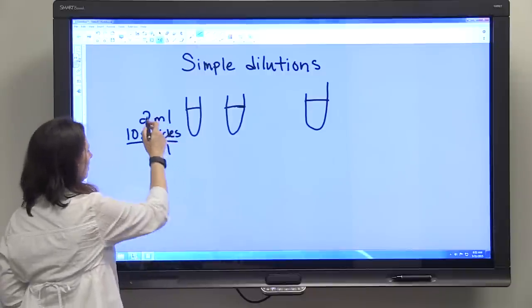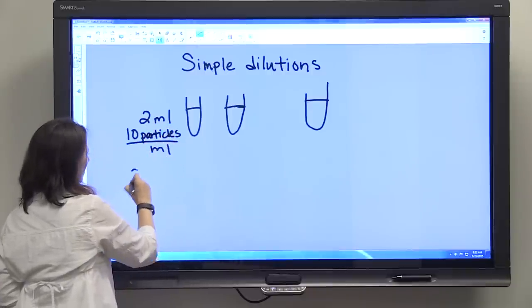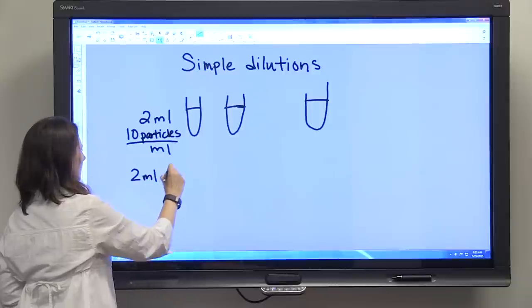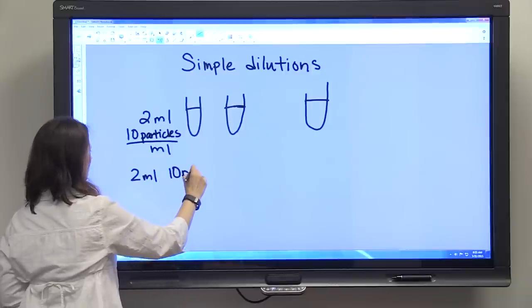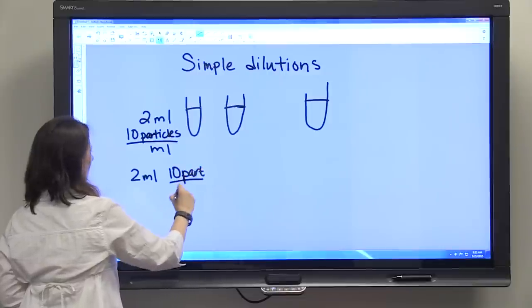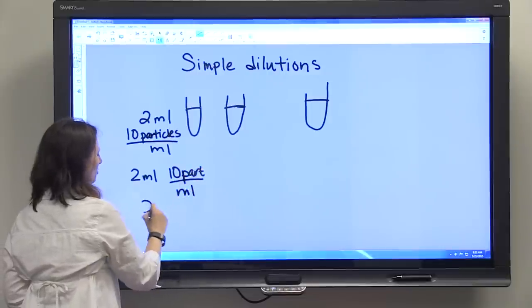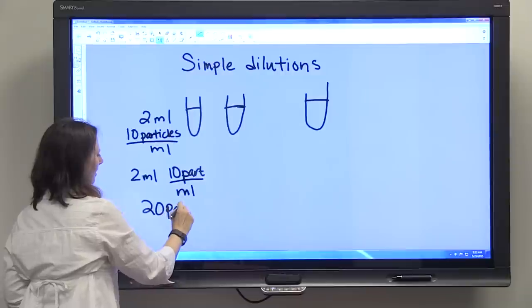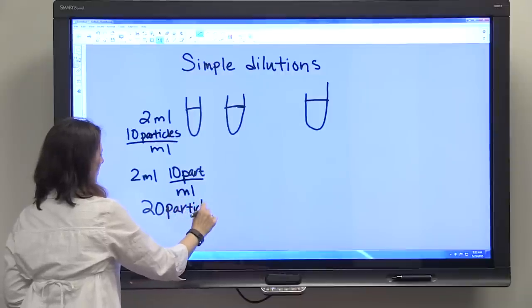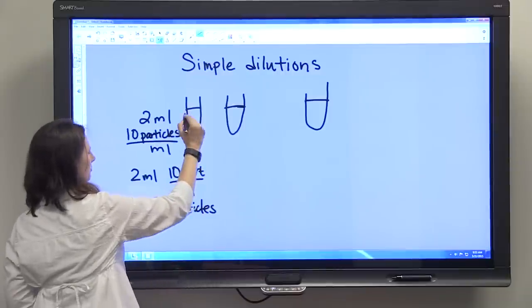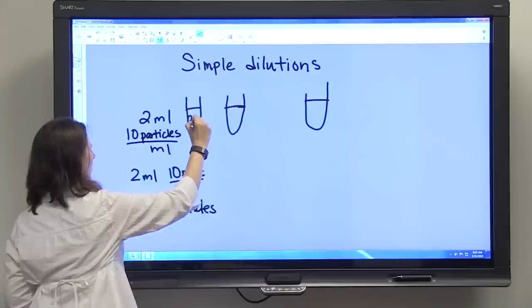So we know that we have 2 ml, it's 10 particles per ml, so we have 20 particles that are starting out in this test tube. So we've got 20 particles in there.